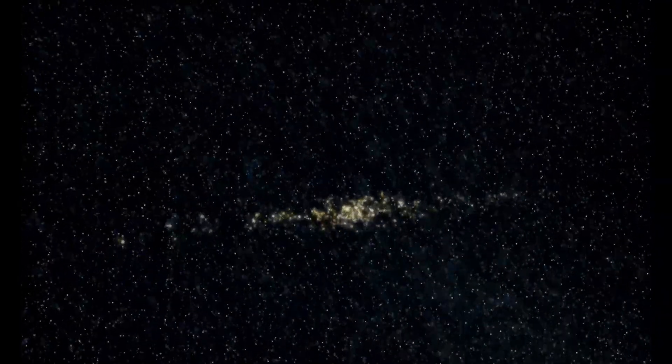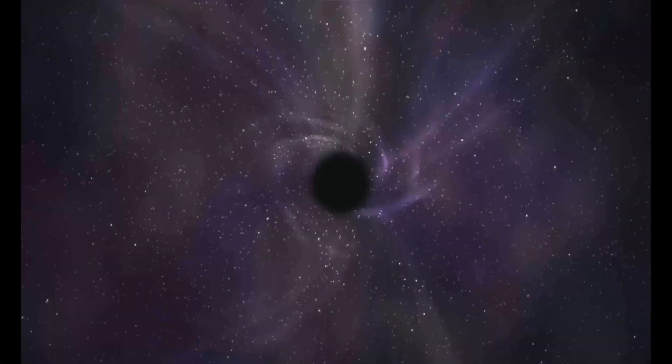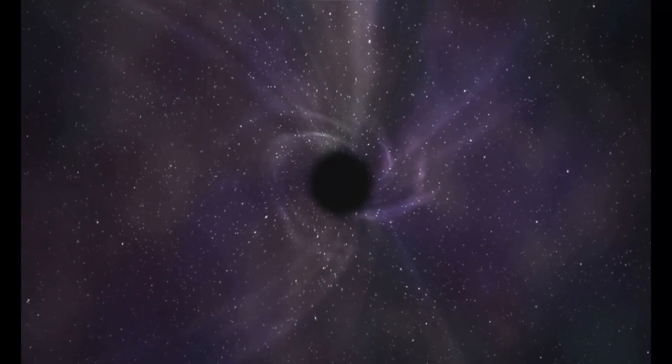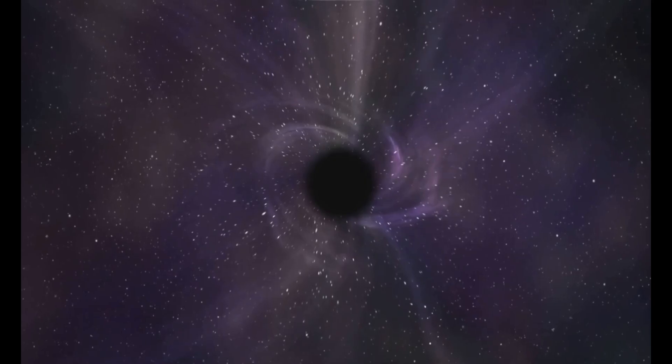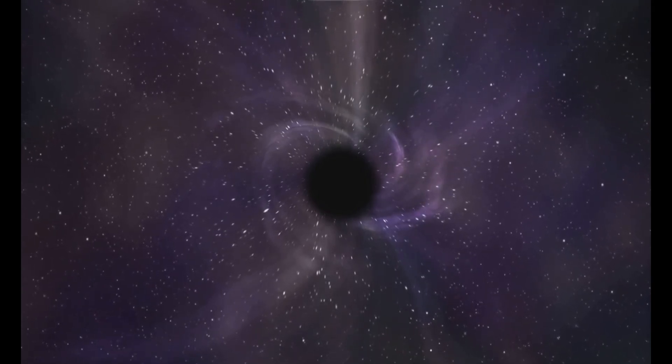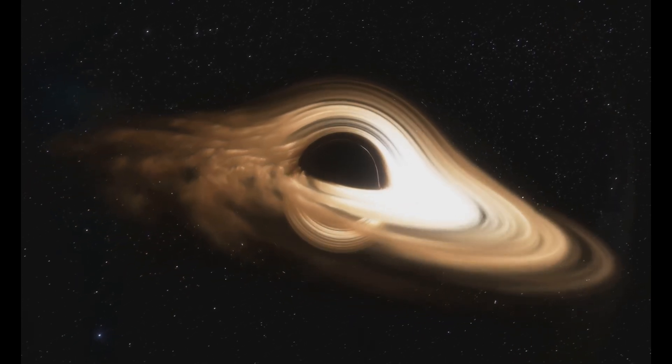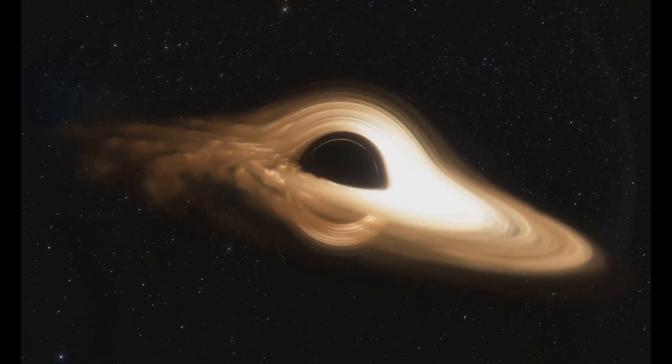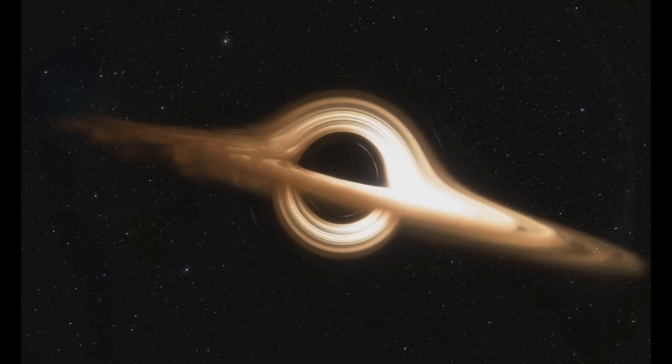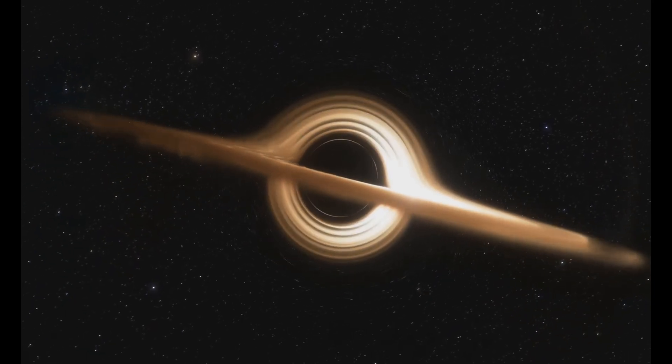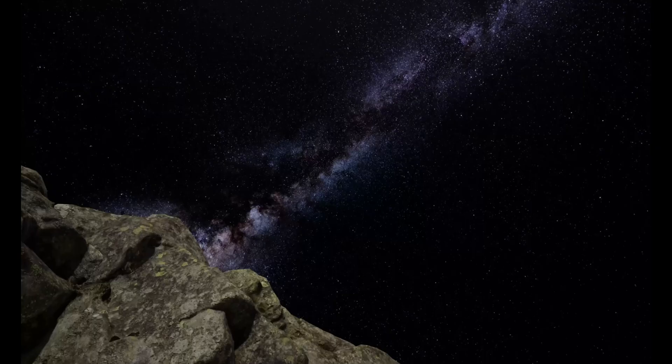Black holes are invisible because they don't reflect light. Instead, they absorb all the light that comes too close, making them appear as dark voids in space. But we can detect them by observing how they affect nearby stars and gas. The gravitational influence of a black hole can cause stars to orbit around an unseen center or gas clouds to spiral inwards.